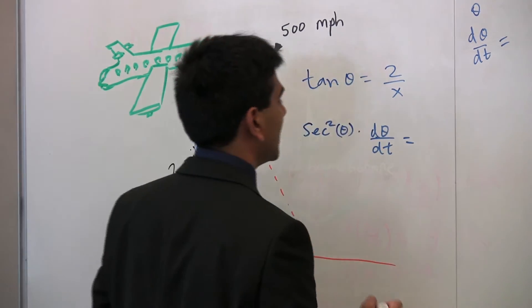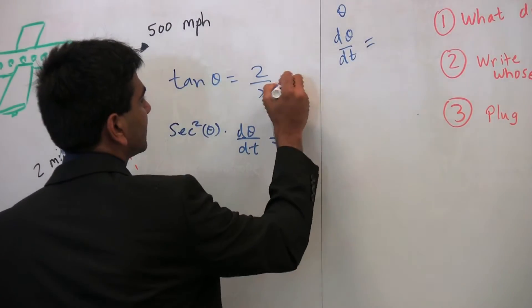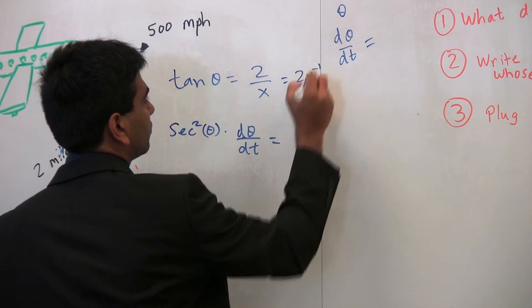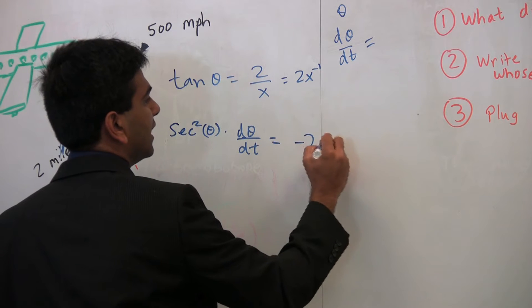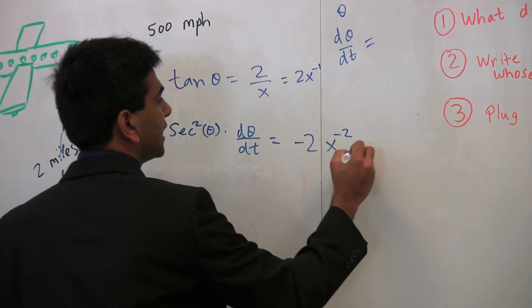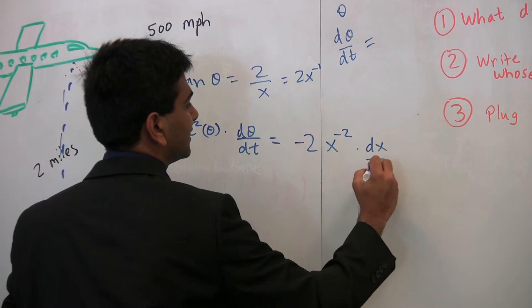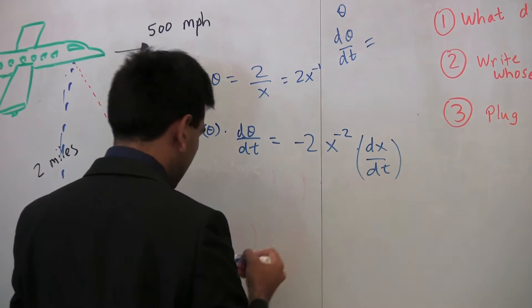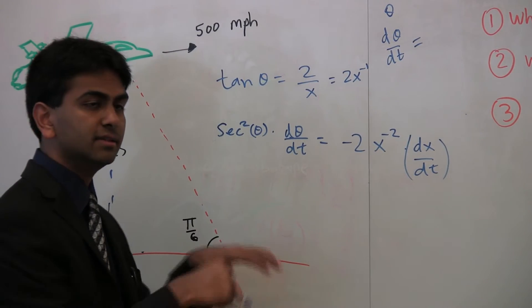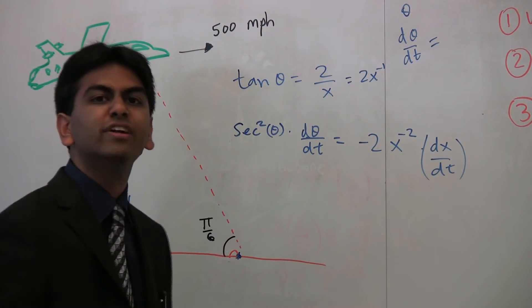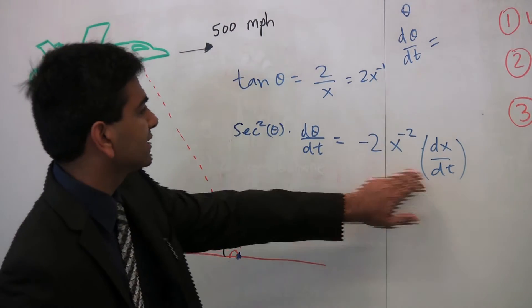Now, it's probably easier to think of this as 2x to the negative 1. So, now the derivative is just negative 2x to the negative 2 times dx/dt, because that's the derivative of x. So, now, notice whenever you have a variable, the derivative of that variable is d, that variable, over dt. So, the derivative of x is dx/dt.